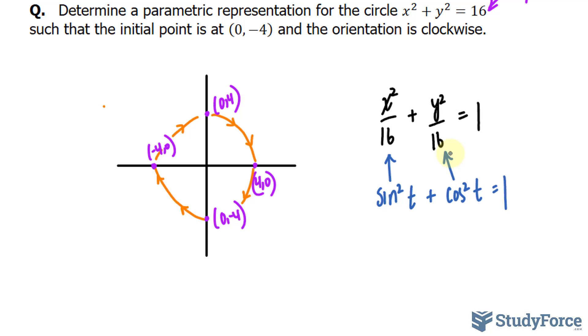Now because ours lies on the y-axis, I'll set sine squared t equal to x-squared over 16, and cosine squared t is equal to y-squared over 16.